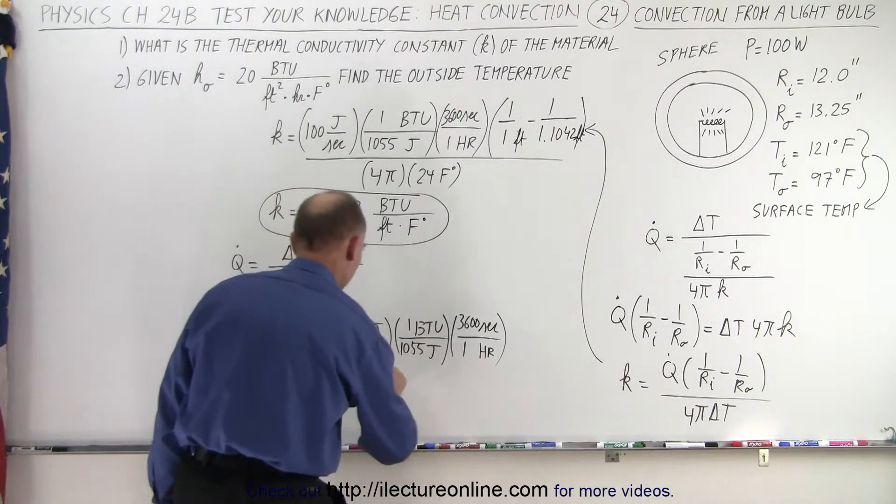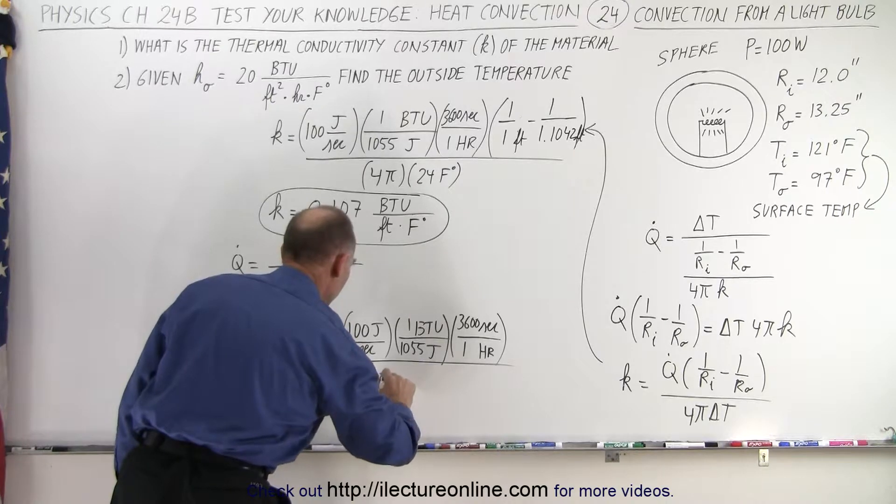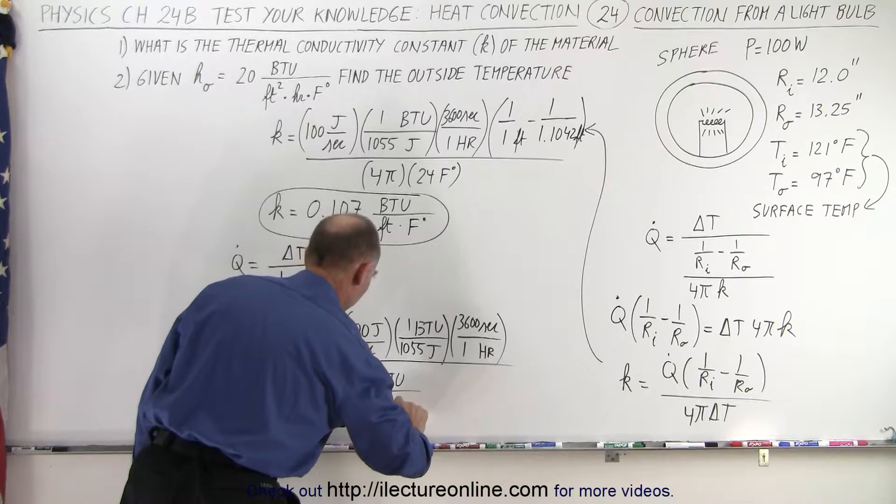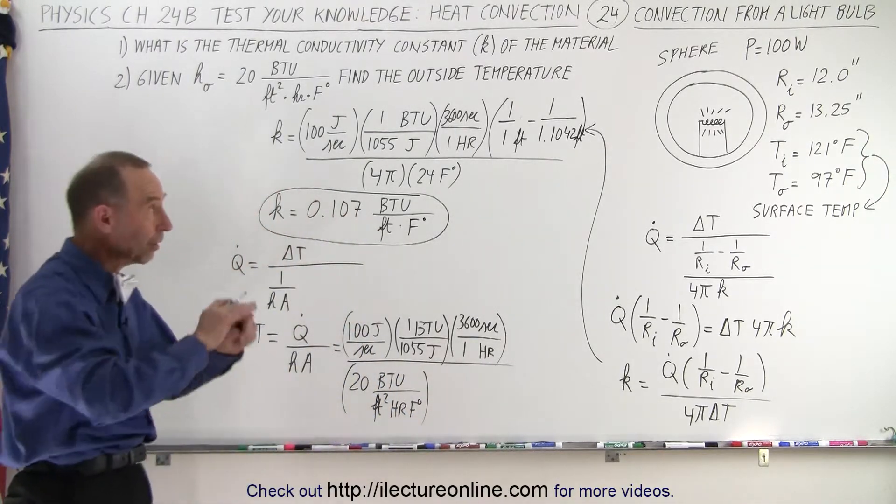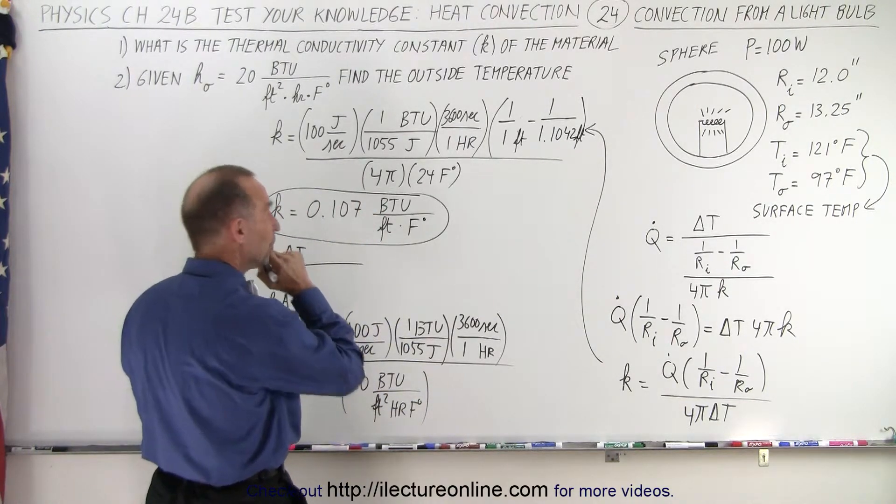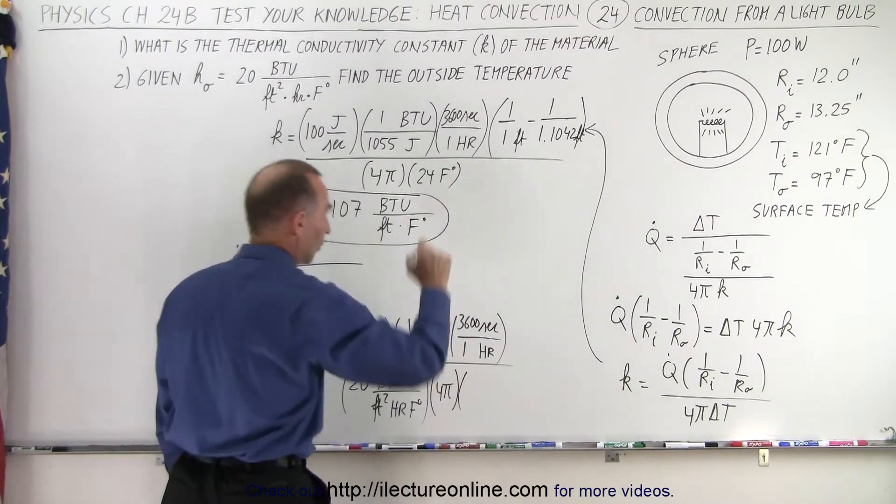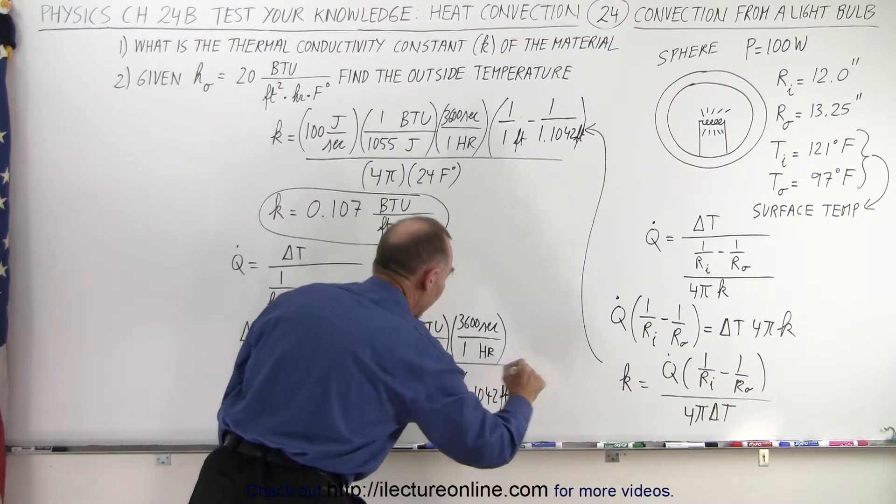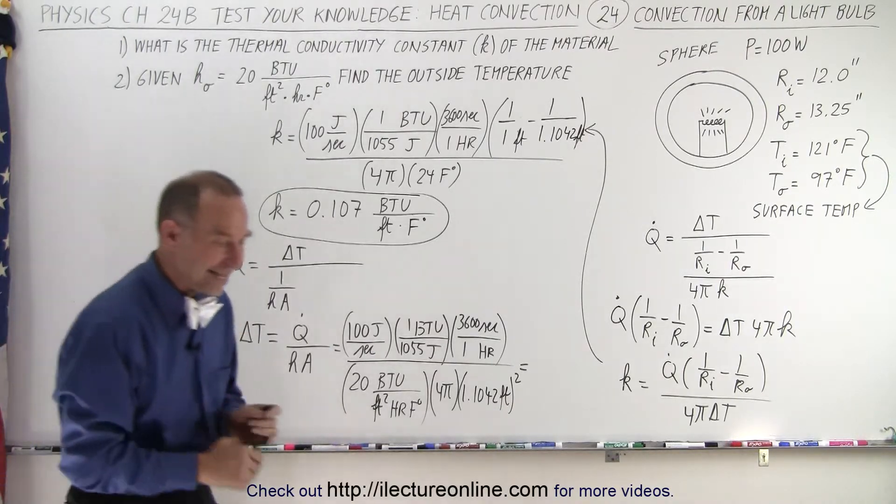In the denominator, we have H, which is given to us as 20 BTU per square feet, per hour, per Fahrenheit degree. And now we need to have the area of the outside surface of the light bulb, so the outside surface is going to be, it's a sphere, so it's 4 pi, times the radius squared, and the outside radius is 1.1042 feet, and we have to square that. And that should give us the difference in the temperature between the outside surface and the air.